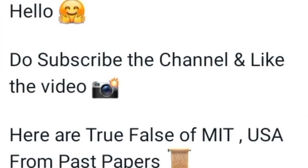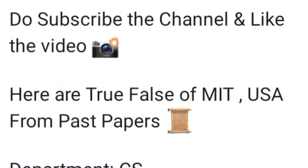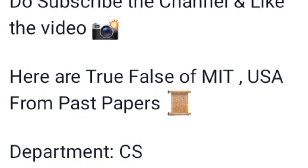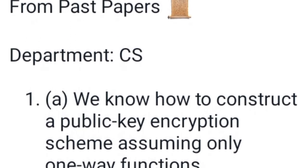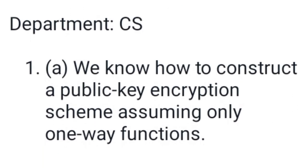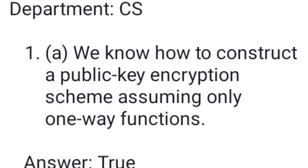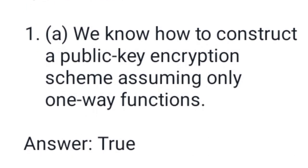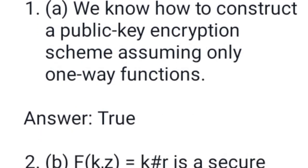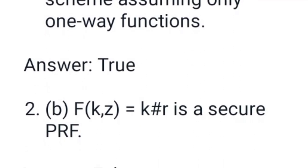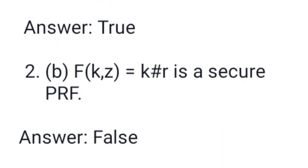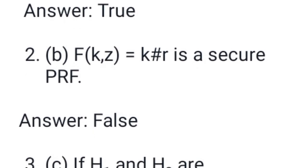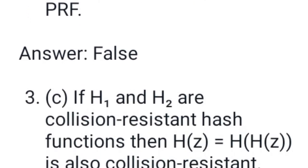Hello, do subscribe to this channel and like the video. Here are true/false questions from MIT USA past papers for the CS department. Number one: we know how to construct a public encryption scheme assuming only one-way functions. Answer is true. Number two: f_k,z = k⊕r is a secure PRF. Answer is false.